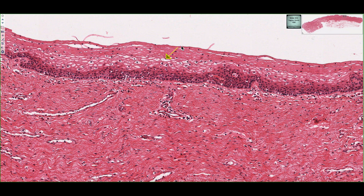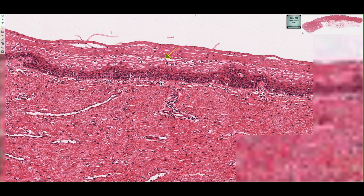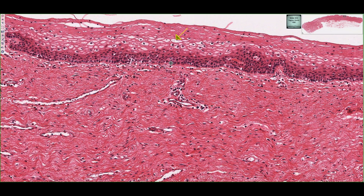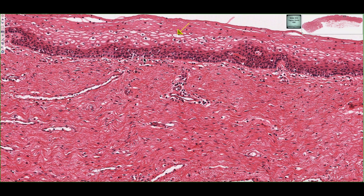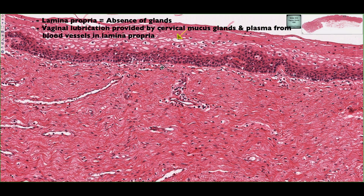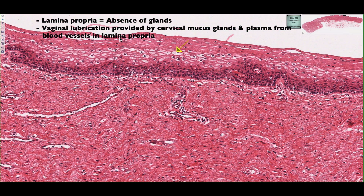So it's a protective mechanism. And if we note in the lamina propria, just deep to this epithelial lining, we can see an absence of glands. The vagina is actually lubricated by the mucous secretions from the cervix and the glands that are found there.